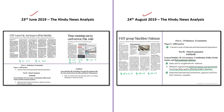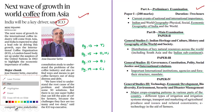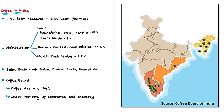Moving on to the final news article discussion, which is based on coffee production and the International Coffee Organization. The news article is about a statement made by the ICO — International Coffee Organization — saying that the next wave of growth in the international coffee industry will come from Asia, with India expected to play a lead role. In India, coffee is cultivated in about 4.54 lakh hectares by 3.66 lakh coffee farmers, mainly in the southern states.